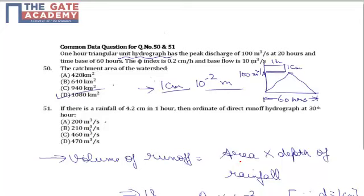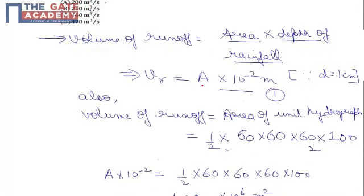The volume of runoff will be given by area of field into depth of rainfall. So it is A into 10 to the power minus 2 meter. Also unit hydrograph talks about the direct runoff, nothing infiltration no base flow. So volume of runoff has to be equal to area of unit hydrograph.